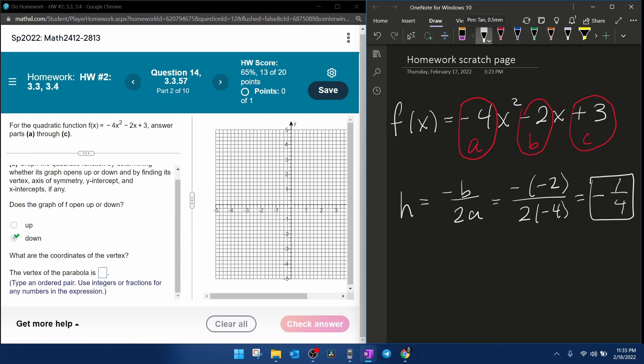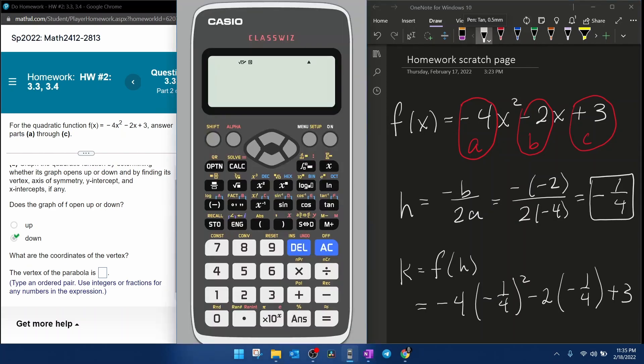Once we know h, we can find k. k is f of h. So substituting into the function, we're going to get negative 4 times negative 1 fourth squared, minus 2 times negative 1 fourth, plus 3, and again,